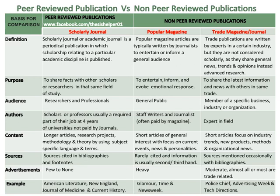The audience of a scholarly journal is researchers and professionals, whereas the audience of a popular magazine article is the general public, whereas the audience of trade publications are members of a specific business, industry or organisation.